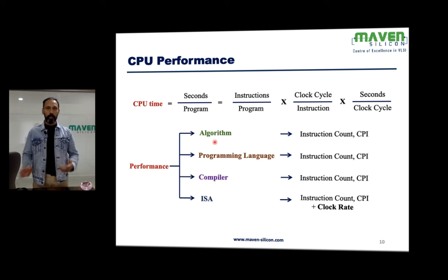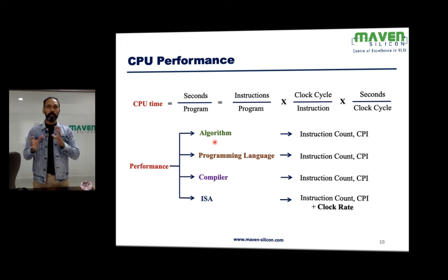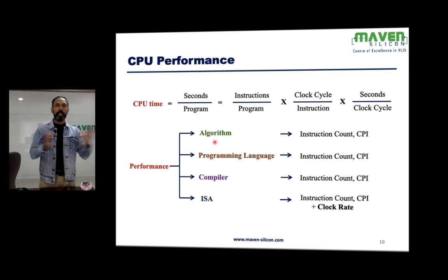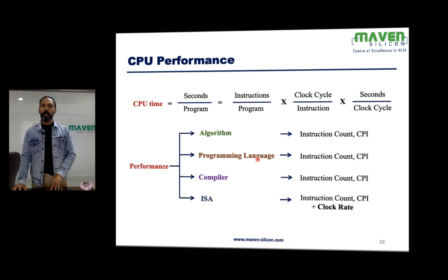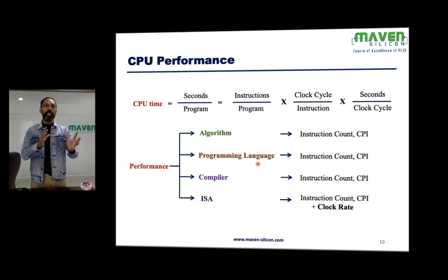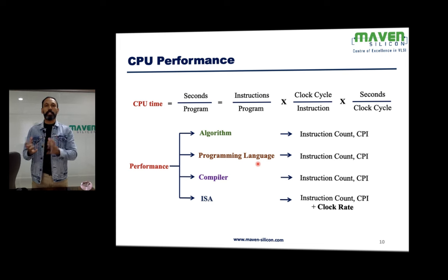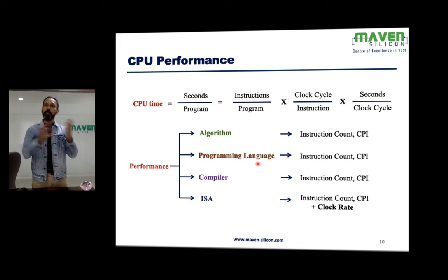The algorithm determines how many instructions are required — the choice of algorithm to implement a software application directly decides the instruction count. The programming language also matters: C++ may demand fewer instructions than C because it is based on object-oriented programming, enabling reusability that may not be possible in C.